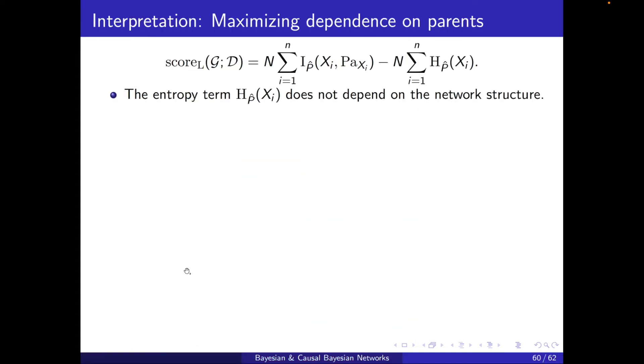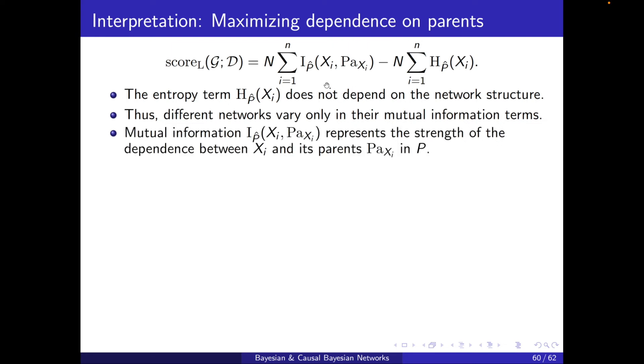Now, I want to interpret the likelihood score. I have written the formula here. Note that this last term, this has nothing to do with the structure. It's just the entropy of the variables. So when I'm comparing different structures, I can just ignore this term. Same story with n. So I only need to focus on the mutual information.